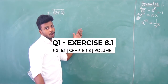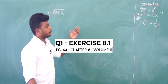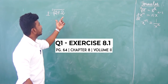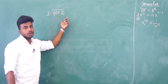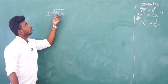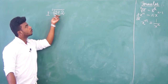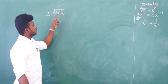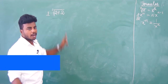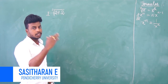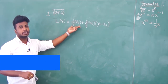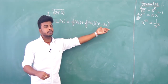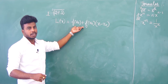Page number 64, volume 2. The problem: use the linear approximation to approximate the value of cube root of 27.2. The linear approximation formula is: f(x) ≈ f(x0) + f'(x0) · (x − x0).